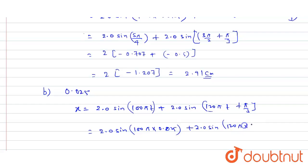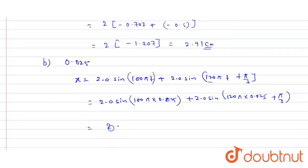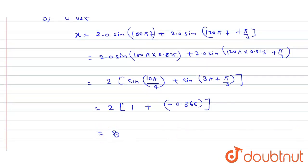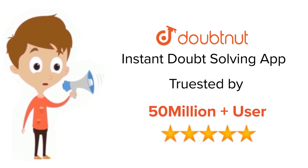On solving, this becomes 2.0 sin(10π/4) plus 2.0 sin(3π + π/3). Taking 2 as common: sin(10π/4) equals 1, and sin(3π + π/3) equals −0.866. Adding: 2 × (1 + (−0.866)) = 2 × 0.134, giving a displacement of approximately 0.27 centimeters. Thank you. For class 6 to 12, IIT JEE, and NEET level — trusted by more than 5 crore students — download the Doubtnut app today.